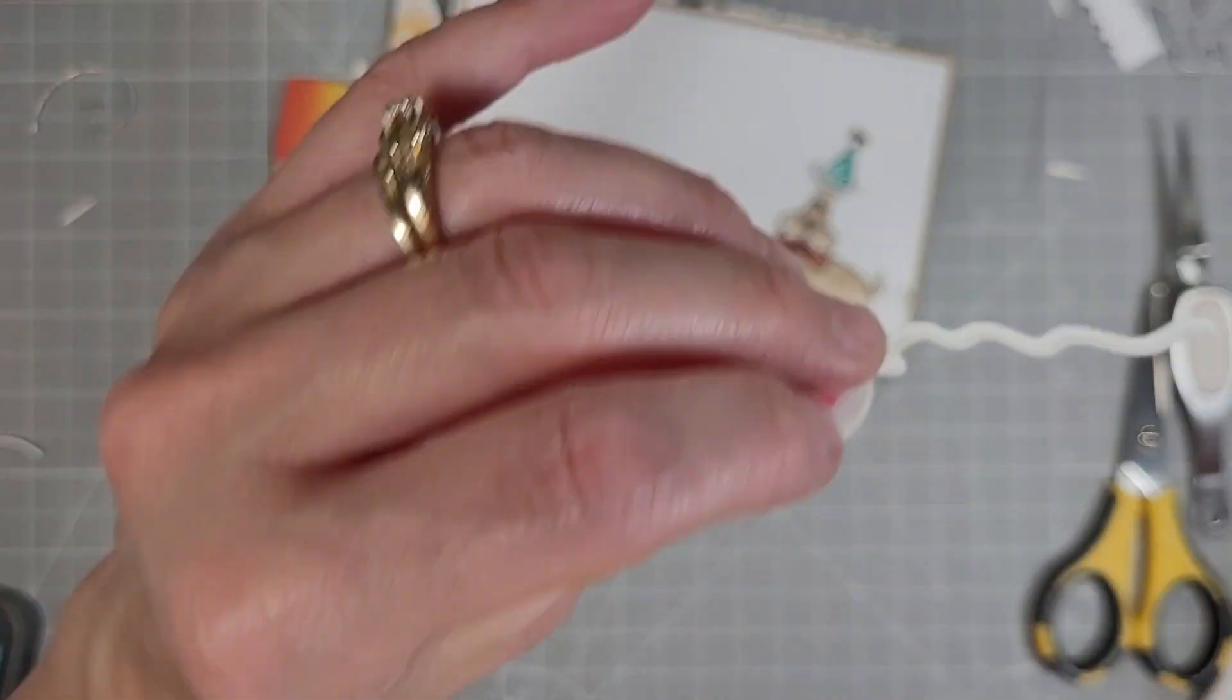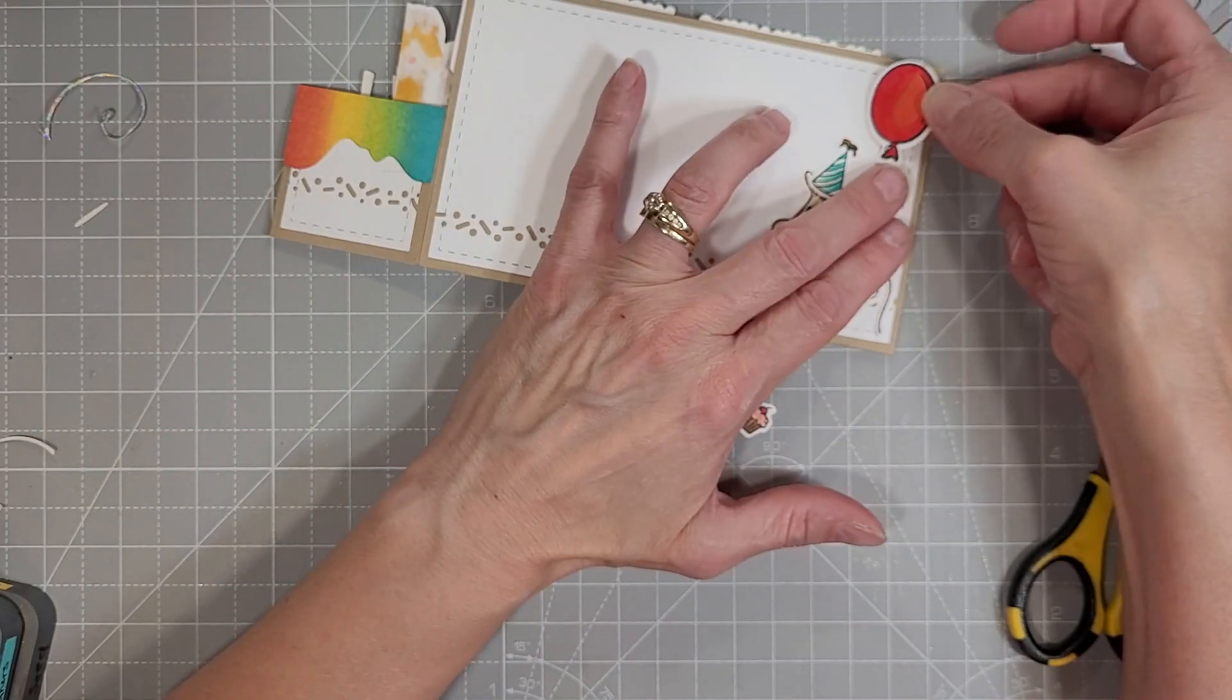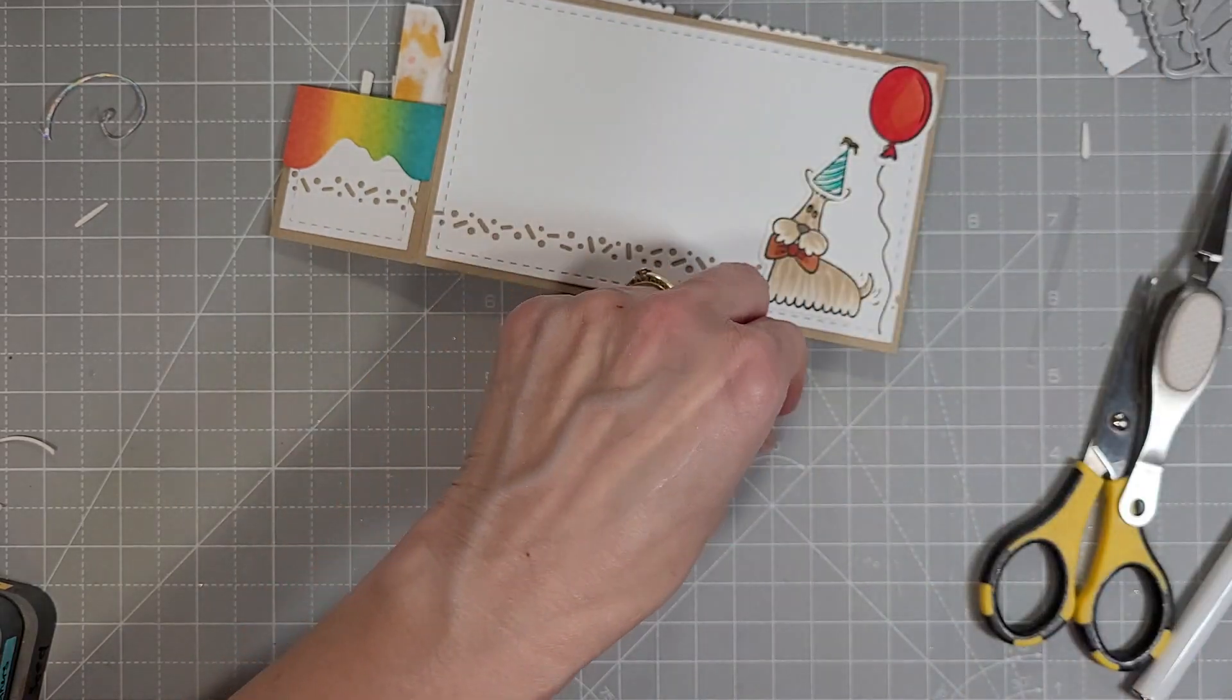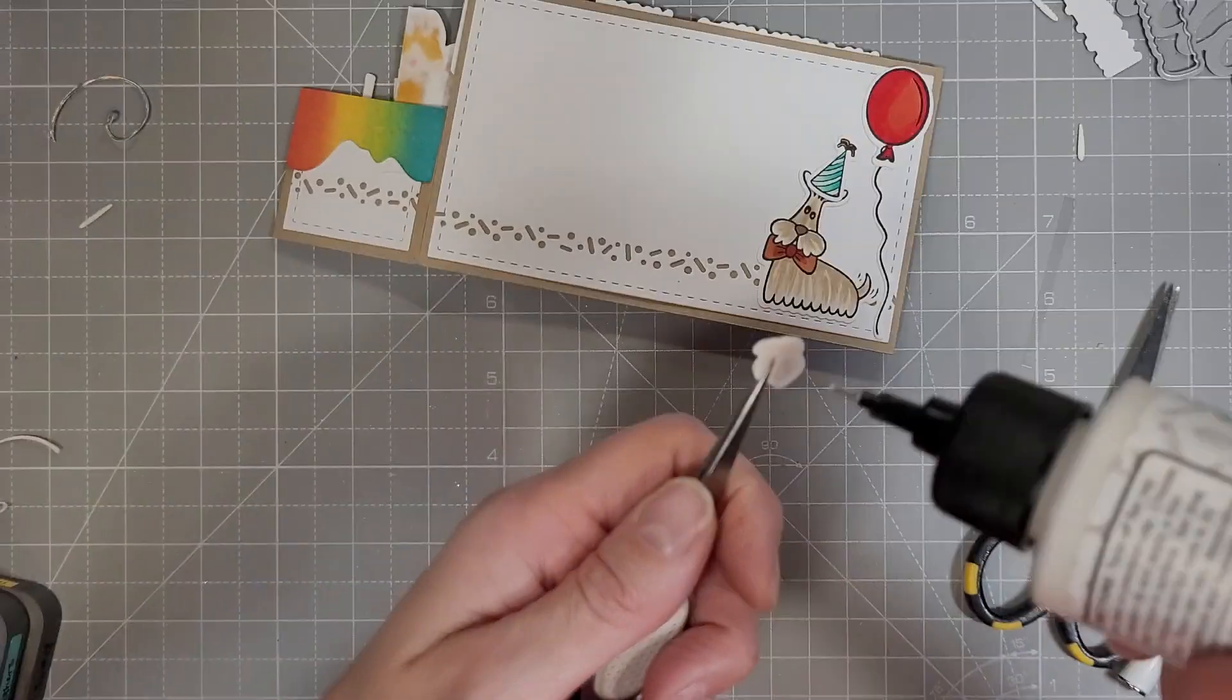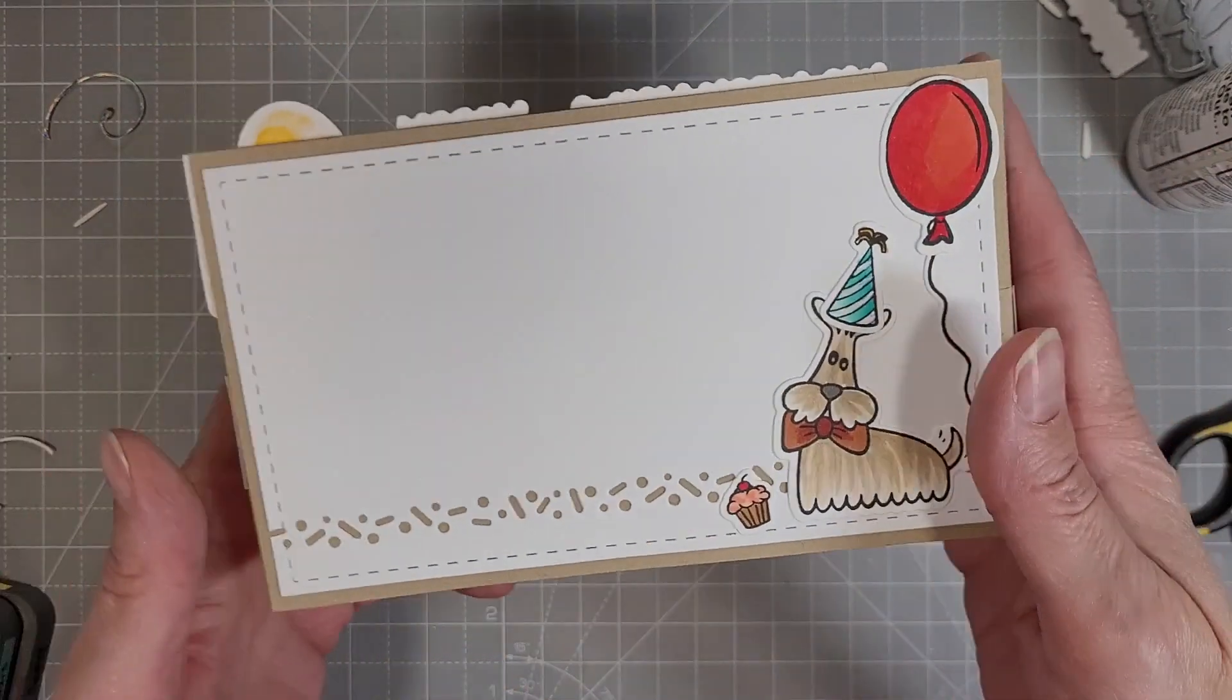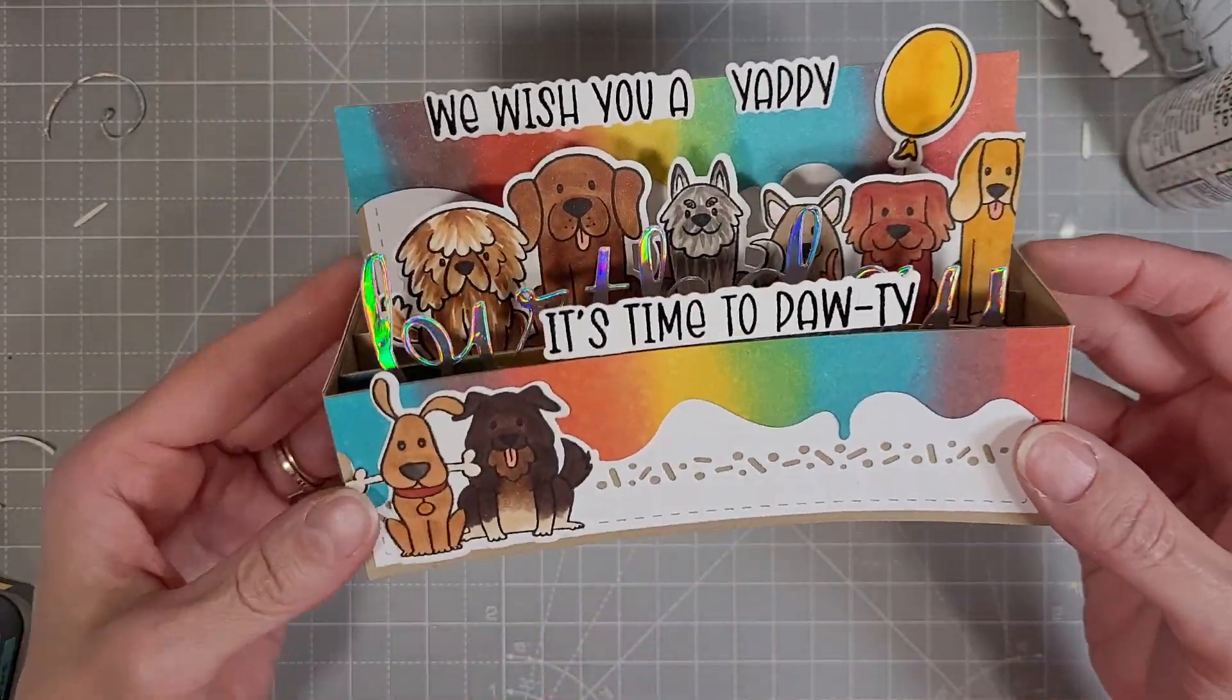We're going to add a second balloon to the back of our card. Now this is where you would add your own personal sentiment or your own message to your recipient. And then there's this tiny little cupcake. We're going to add that to the back too. So cute. I had a lot of fun coloring these puppies and the accessories that come with them. There's also a party blower on this stamp set. Lots of fun.